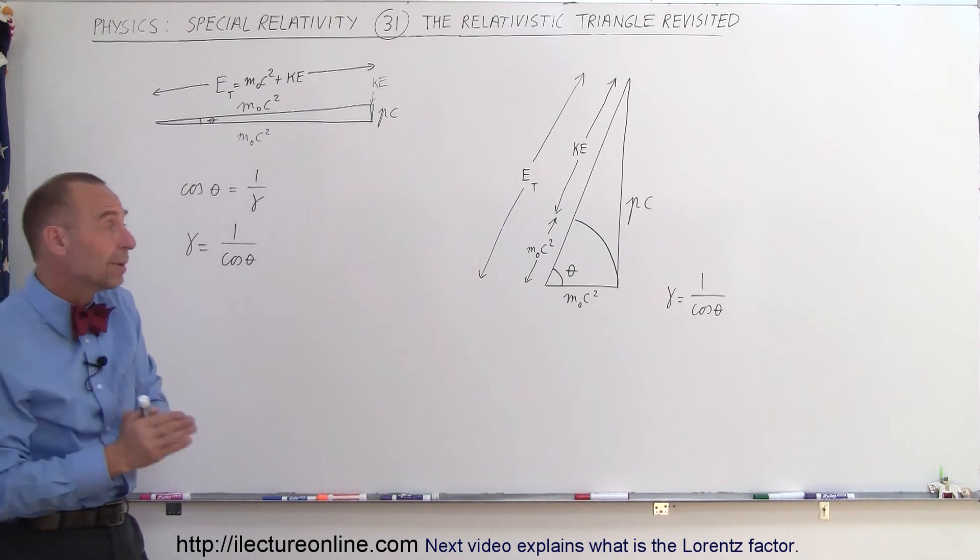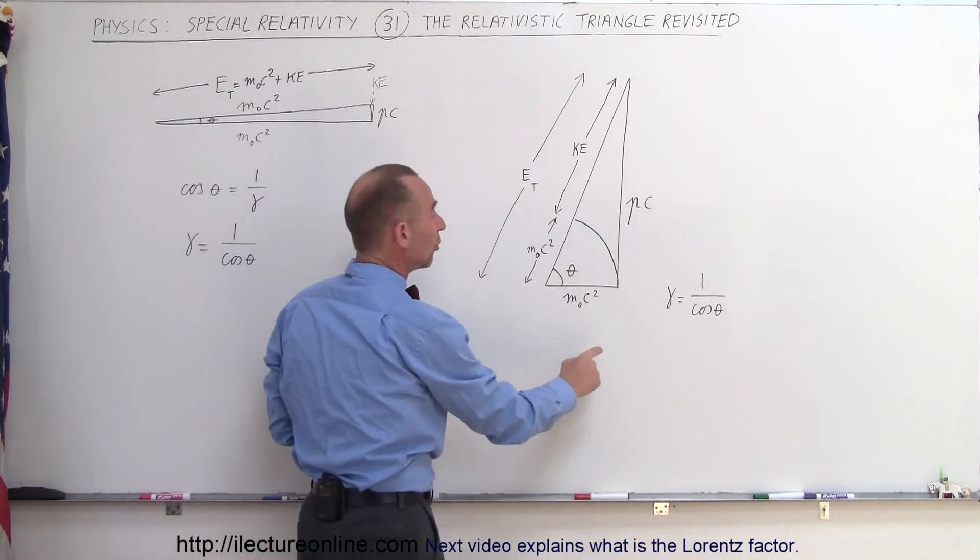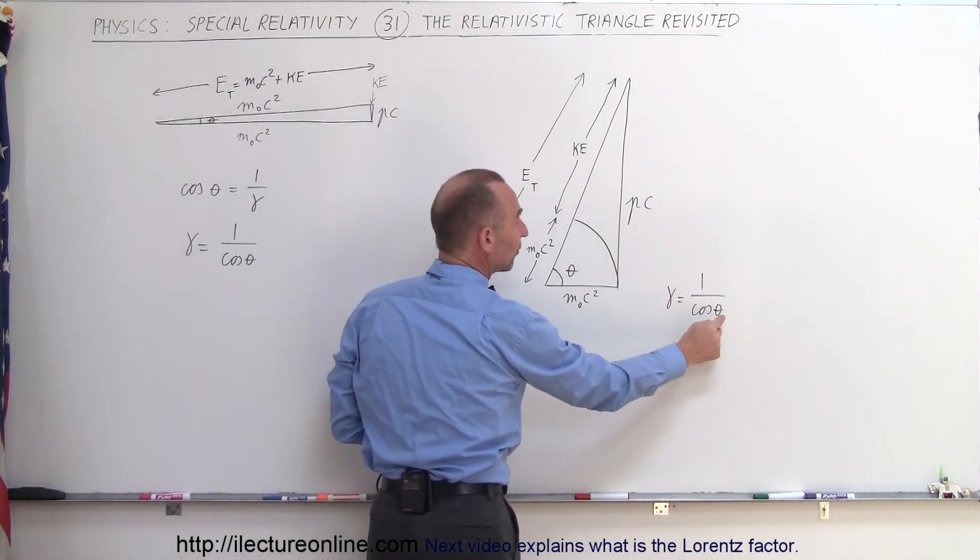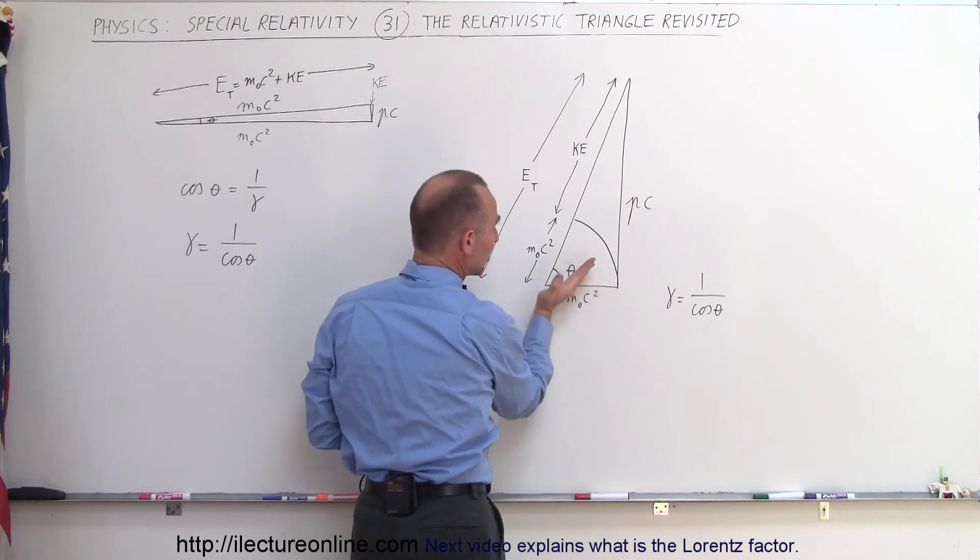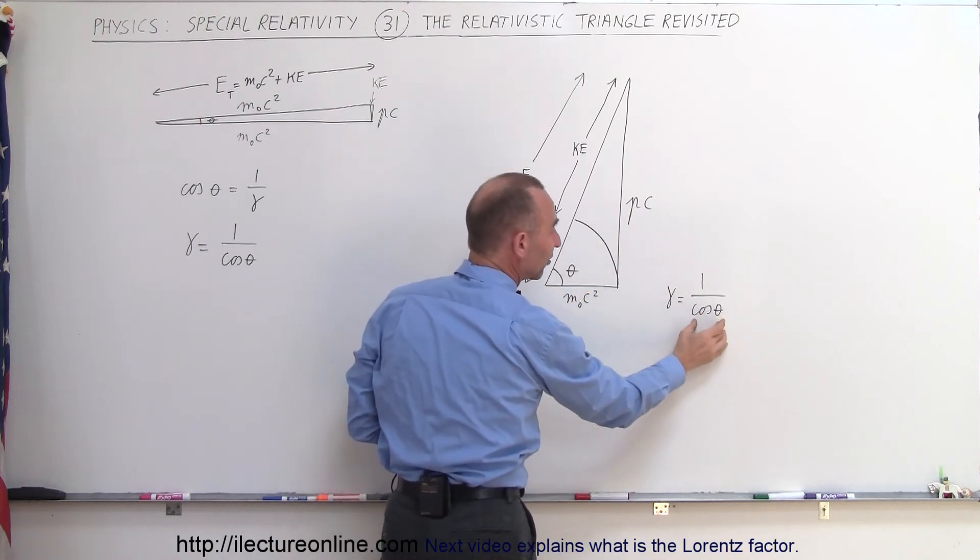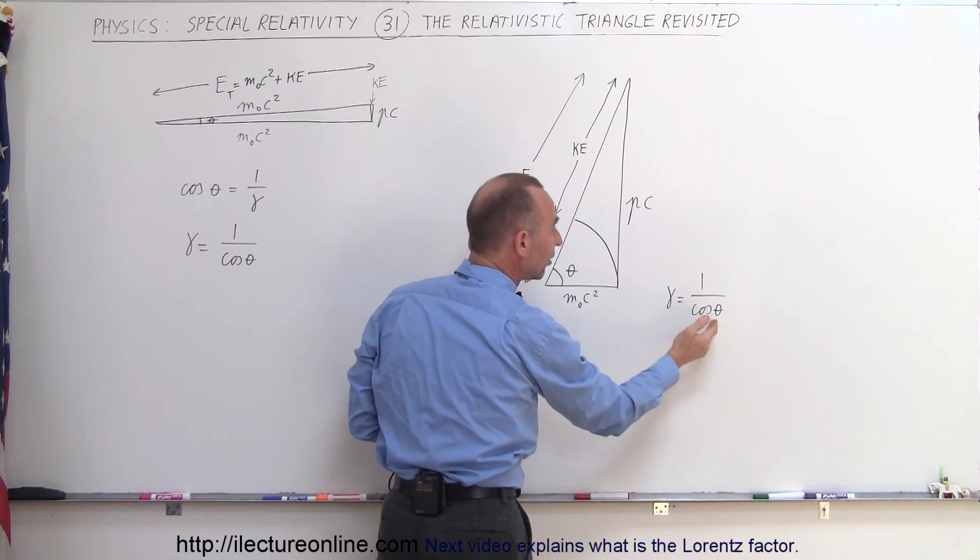Now, if the angle is really big, like it is over here, notice that gamma is 1 over the cosine of the angle theta. As theta nears 90 degrees, the cosine of 90 becomes 0. 1 divided by 0 is infinite,